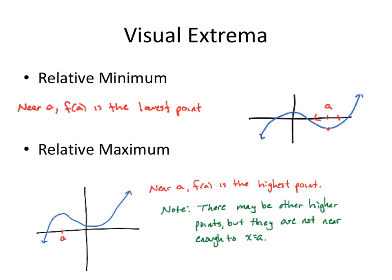Let's take a look at what this actually means. Near a, here, f of a is the lowest point. Now, over here, f of x gets lower. But near here, in the neighborhood, this a value has the lowest y value associated with it. Whereas a relative maximum, here's an a value. And near it, in this area, in this interval of x values, f of a is the highest point.